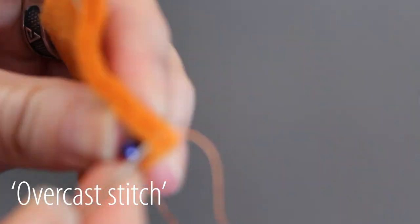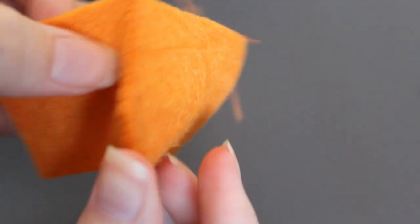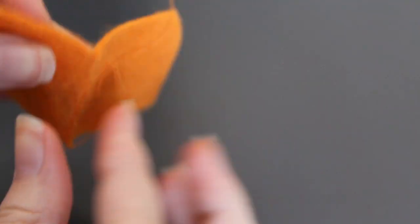Now, sew them into a cubic shape using the overcast stitch. Pretty sure it was also called an overhand stitch, but don't quote me on that.